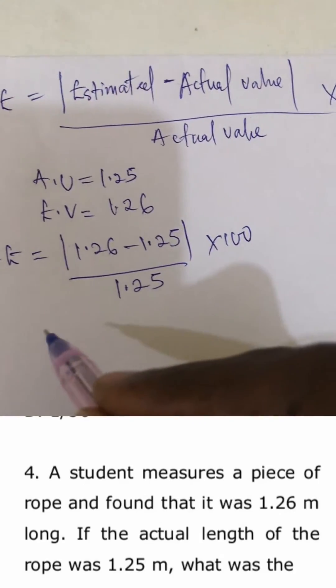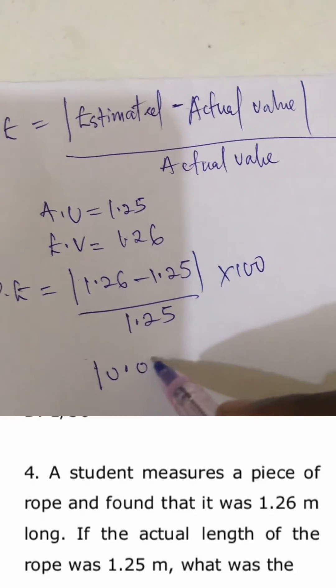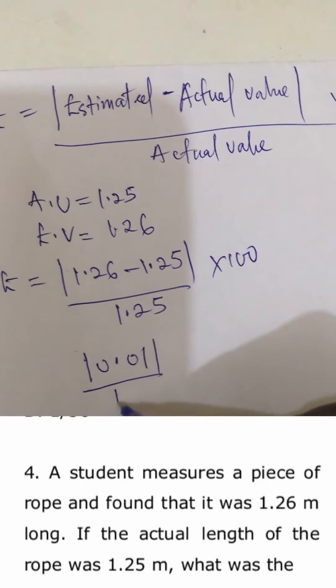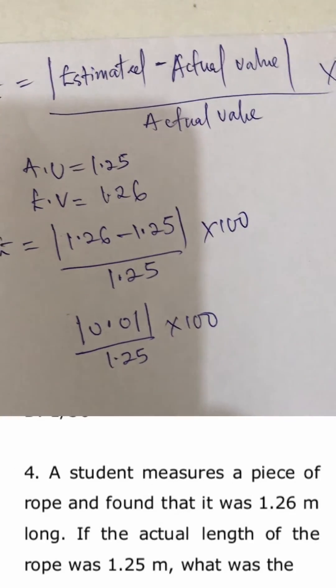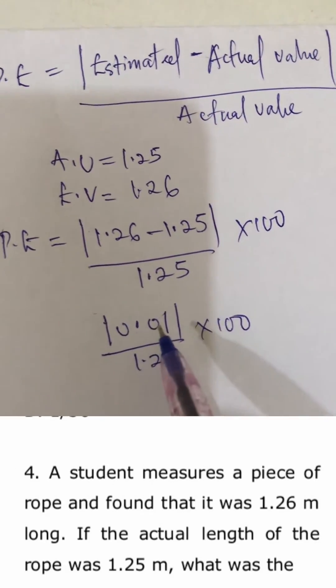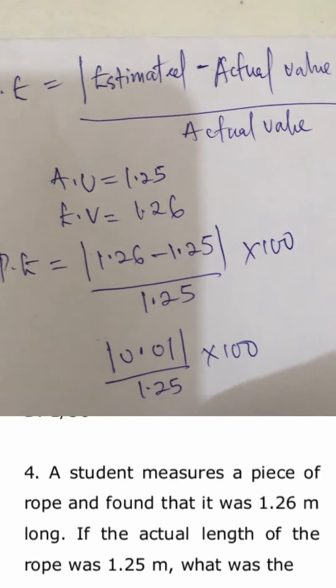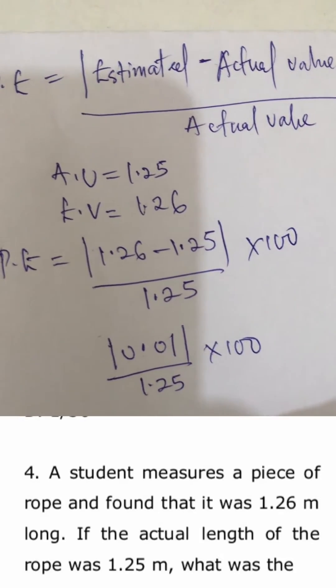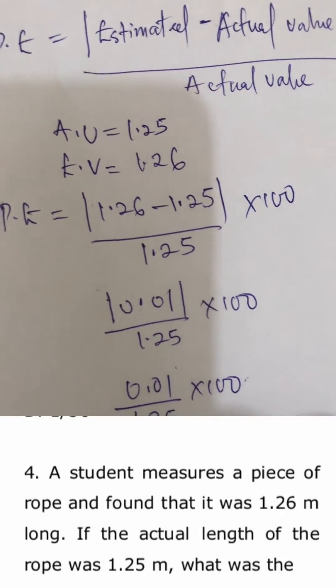And this gives what is 0.01 over 1.25 times 100. The absolute value of any number is the positive value of the number, so in this case we have 0.01 over 1.25 times 100. 0.01 multiplied by 100 gives what, 1 over 1.25.